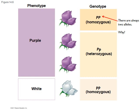Phenotype is the physical representation of the trait. So in pea plants, there are purple flowers and there are white flowers. That's the phenotype — it's what you can see.